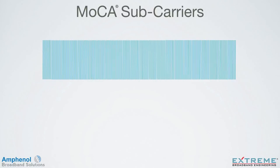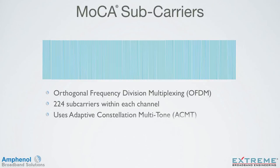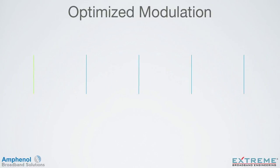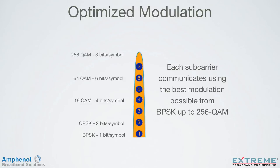MOCA uses Orthogonal Frequency Division Multiplexing, OFDM, which is a frequency division multiplexing scheme utilizing a multi-carrier modulation method. It uses 224 closely spaced independent sub-carriers to carry data. Each of these sub-carriers can be independently modulated using adaptive constellation multi-tone, and the modulation technique on each sub-carrier can change based on the physical characteristics of the signal path, optimizing modulation accordingly. Each sub-carrier communicates using the best modulation possible, from BPSK to 256QAM. The advantage of the MOCA signal is its ability to cope with severe channel conditions such as high attenuation and reflections, by probing the signal path for impairments.